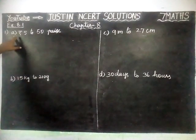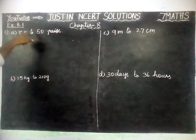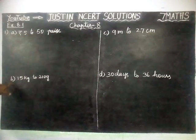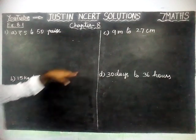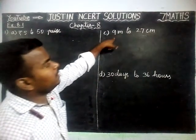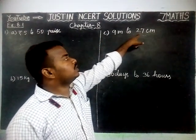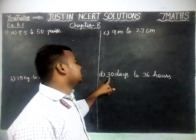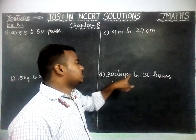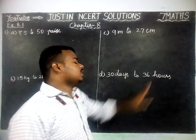Part A: Rupees 5 to 50 paise. Part B: 15 kilogram to 210 gram. Part C: 9 meter to 27 centimeter. And Part D: 30 days to 36 hours.